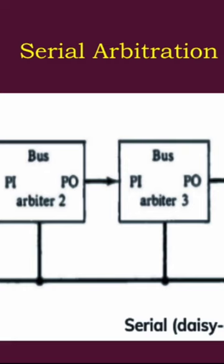PIP A — priority in — is the signal fed into the chain. This line goes from higher priority to lower priority. The highest priority device first gets the input signal from outside — from any other bus controller or arbiter.